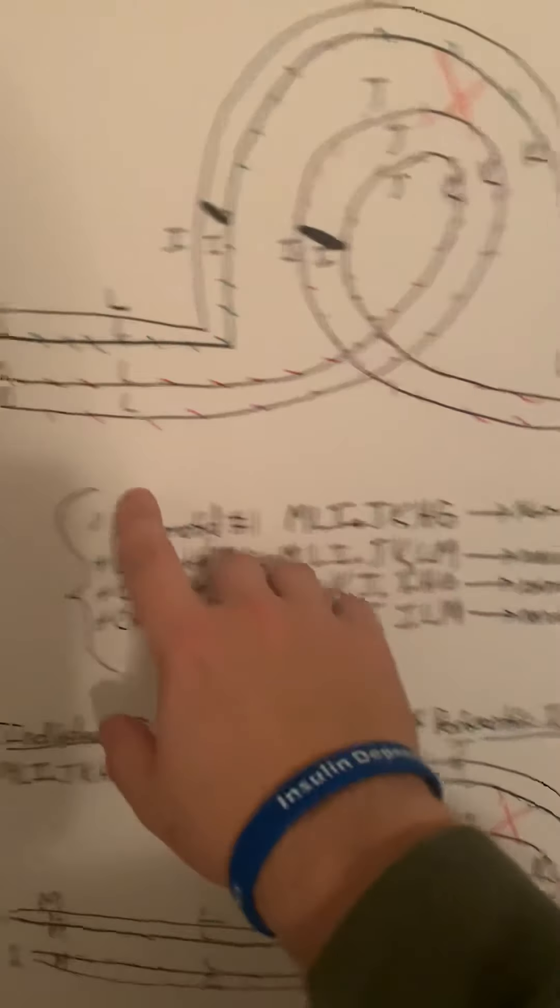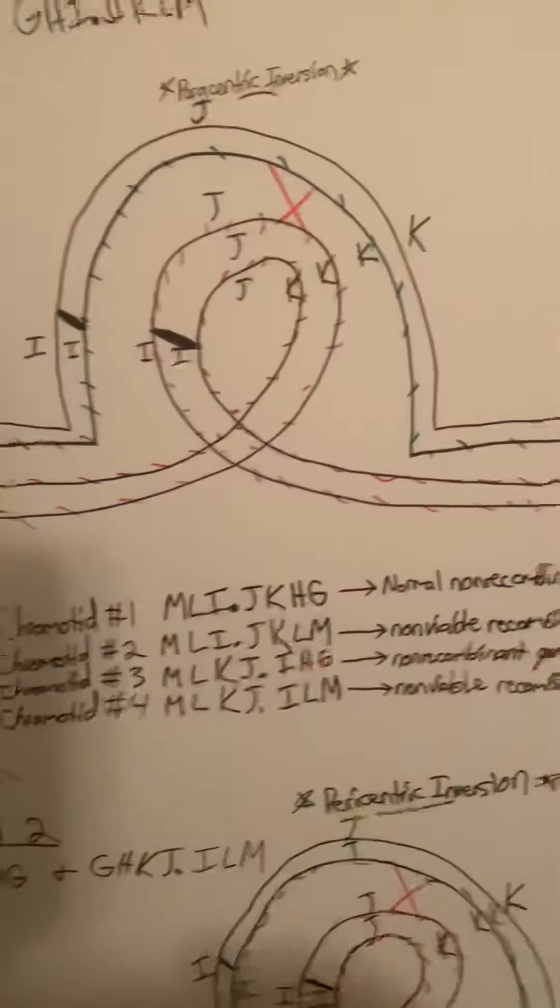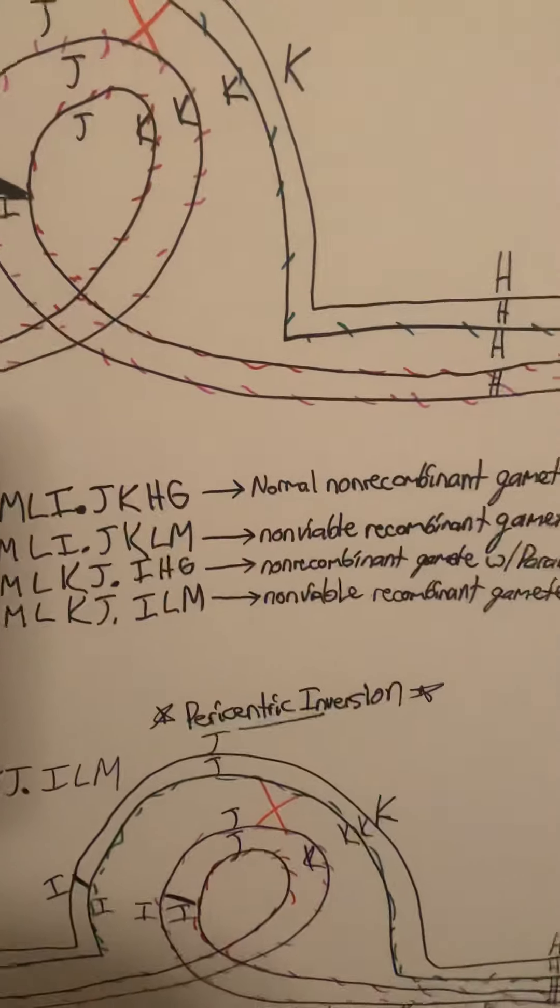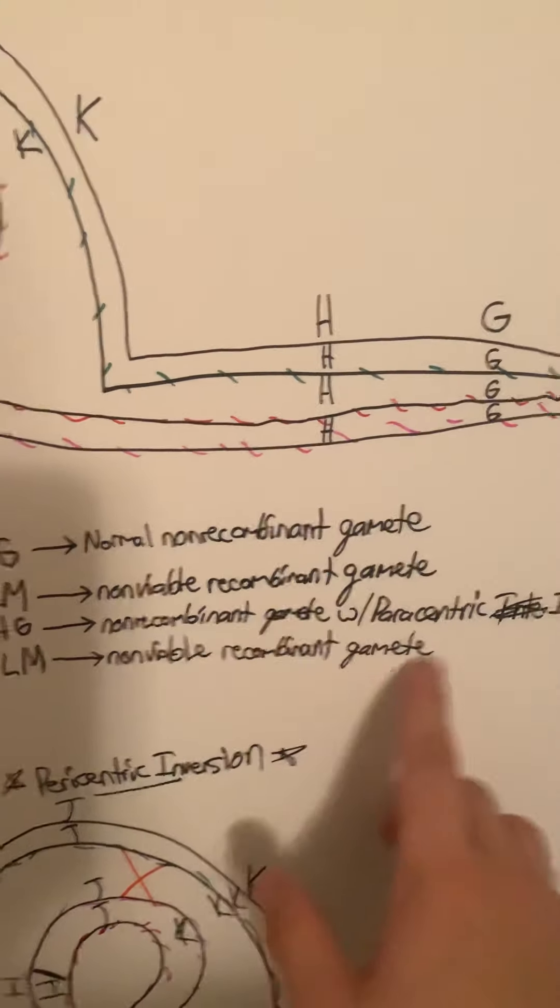However, chromatid 4—you follow that one around—is involved with the crossover in which it will go up here and finish out right there. That would be the same as 2, a non-viable recombinant gamete.